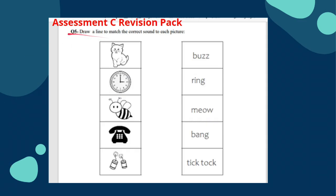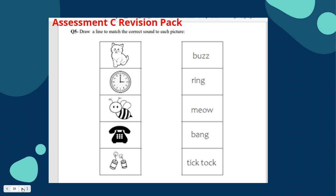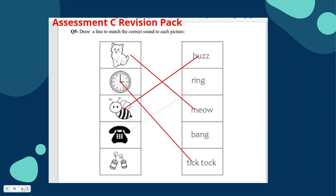Question five: draw a line to match the correct sound to each picture — a cat, clock, bee, telephone, and fireworks. The sounds are buzz, ring, meow, bang, and tick tock. A cat meows. The sound of a clock is tick tock. A bee buzzes. A telephone makes a ring sound. And fireworks bang.